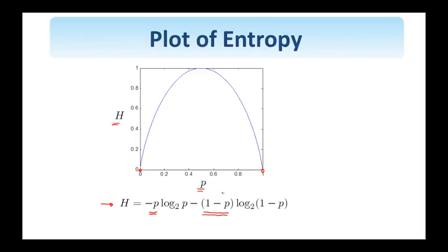So, this is the case when we are certain of the outcome, and that's the case when H vanishes. We also observe here that the maximum value of the entropy is obtained for p equals 0.5.